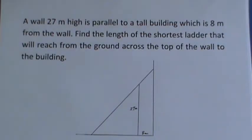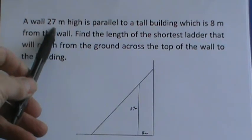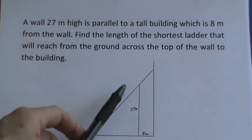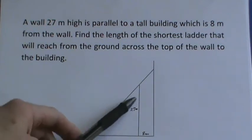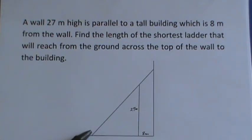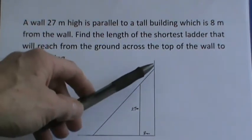In this problem we have a wall that's 27 meters high. It's parallel to a tall building which is 8 meters from the wall and we have to find the length of the shortest ladder that will reach across the top of the wall from the ground to the building.